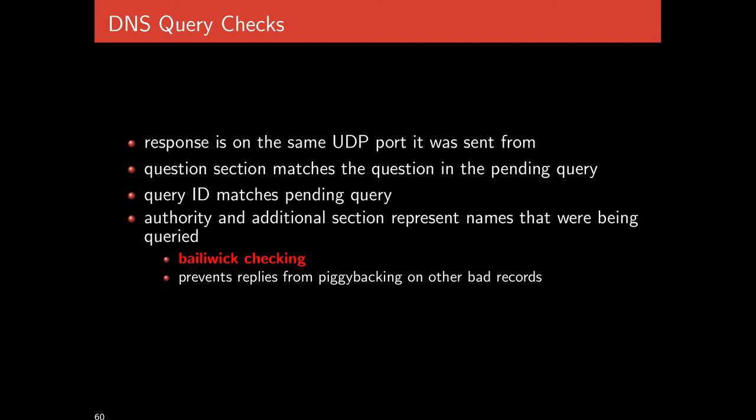Second, there's the question section — we repeat the question in the response, and that has to match as well. So it can't just be an answer to a question that no one ever asked. It can't be the case that you asked for google.com and you're given bing.com's IP address — it's like, I've never asked for bing.com, why would you tell me this? The query ID has to match as well, so now we have an actual number that has to be exactly the same, along with the port.